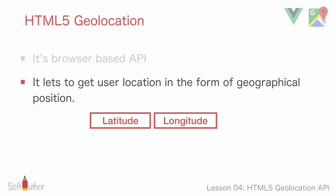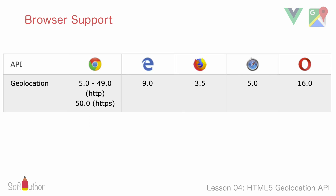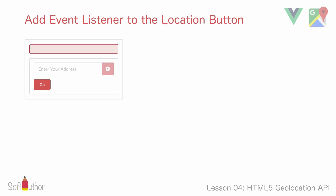Here is the chart that shows which browser and version supports this geolocation API. One thing worth pointing out is that Google Chrome version 50 or above only enables this API when using an HTTPS connection. However, it works fine on localhost, which is exactly where I will be testing this.